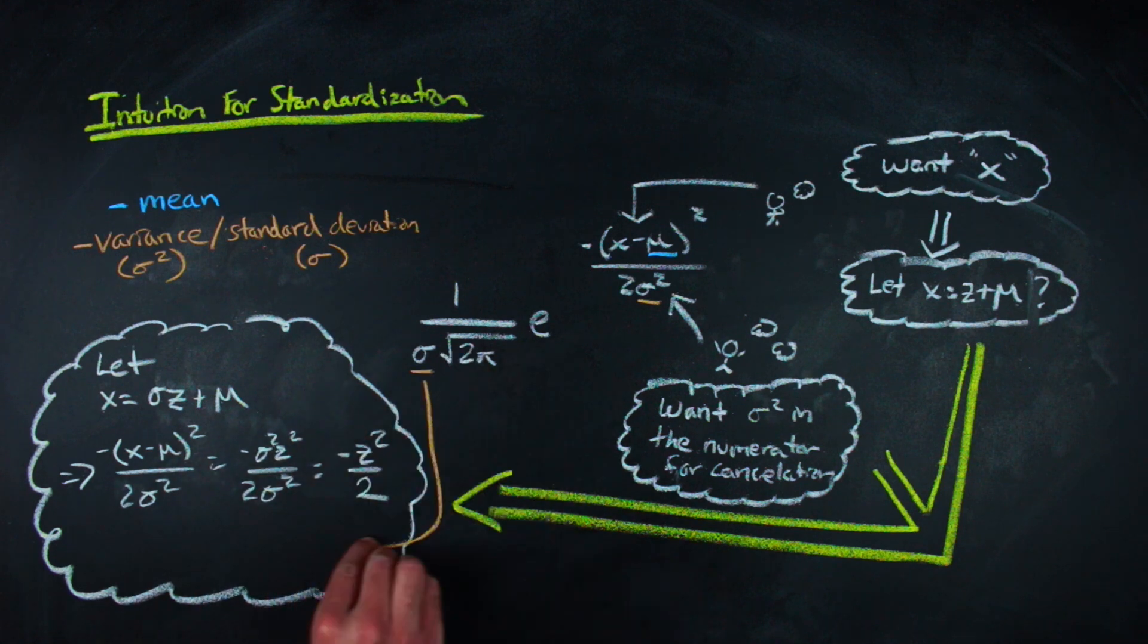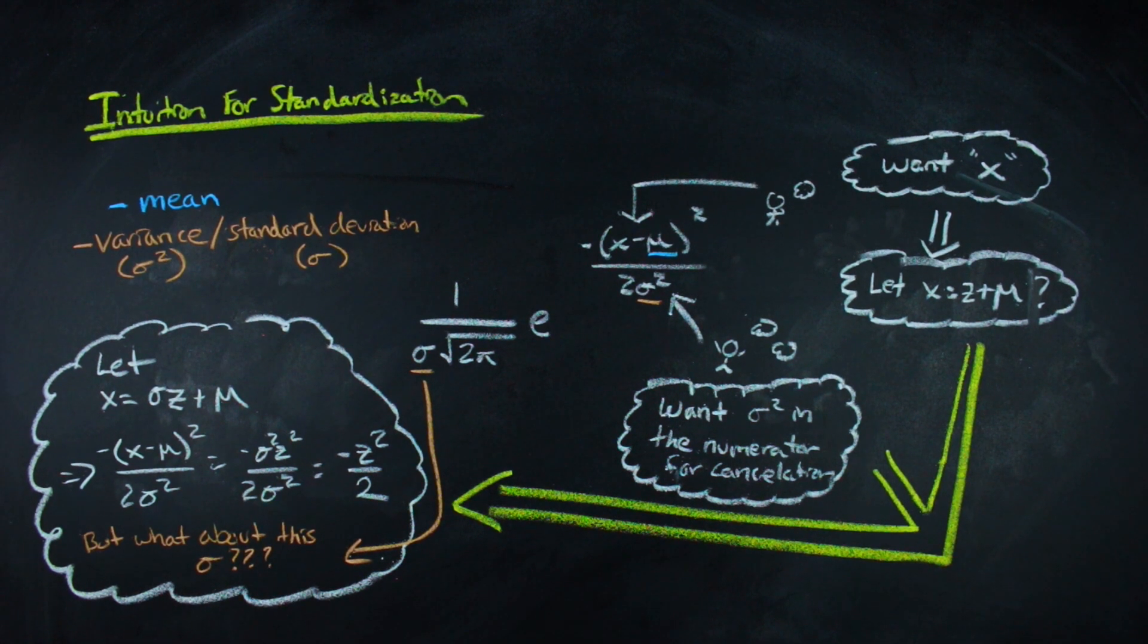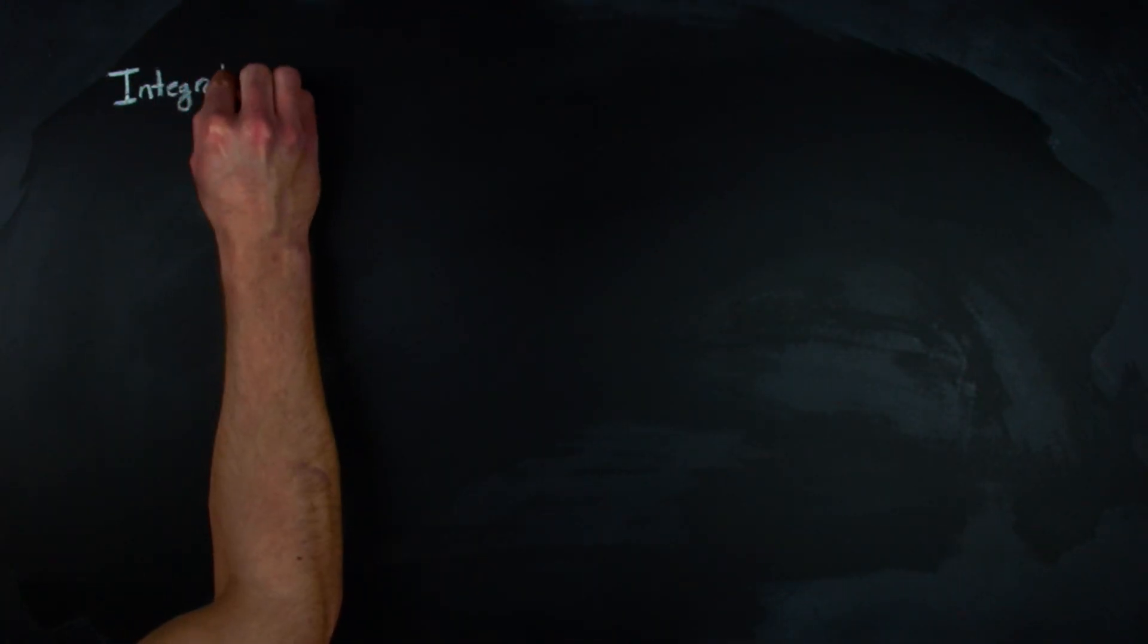You might be wondering, what about the sigma in the front and the denominator that we weren't able to touch? To get rid of that, we have to talk about some integration. Don't worry, it's not going to be super calculus intensive.